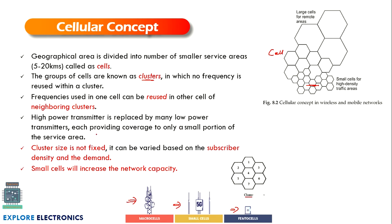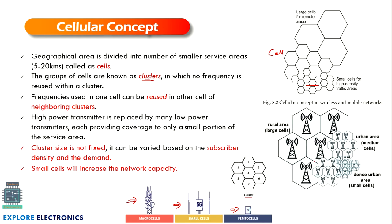Low-power transmitters cover a small portion of the service area, handling the number of users within the same cell. The cluster size is not fixed; it varies based on the number of users in a particular cell or cluster, and depending on network capacity and traffic, cells are grouped into clusters and frequencies are assigned to them.